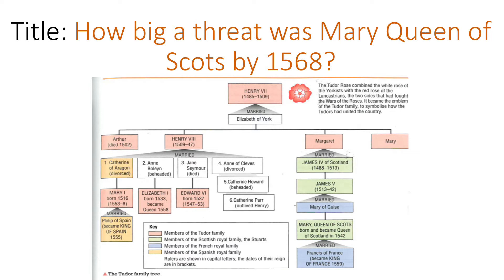At the top of the family tree we can see Henry VII and Elizabeth of York, his wife, and their four children: Arthur, Henry, Margaret and Mary. Arthur dies before he's able to become king. Henry VIII comes to the throne and you can see his wives and his children - Mary, then Elizabeth, then Edward. So Elizabeth is the granddaughter of Henry VII.